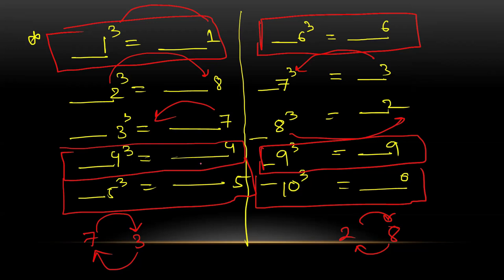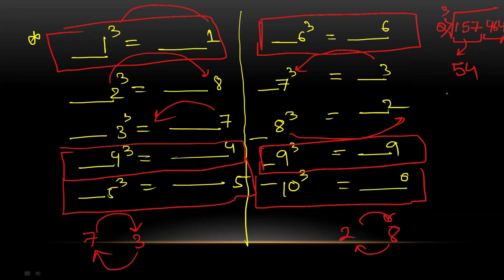Let's try cube root practice. Cube root of 157,464: take the last three digits — 464 — unit is four so cube root ends in four. Take the first part: 157, nearest lower cube is five cubed (125), six cubed is 216, so first digit is five. Answer: 54. Next: cube root of 571,784. First part 571 — eight cubed is 512, nearest lower cube is eight so first digit is eight. Unit digit is four, so cube root ends in four. Answer: 84.